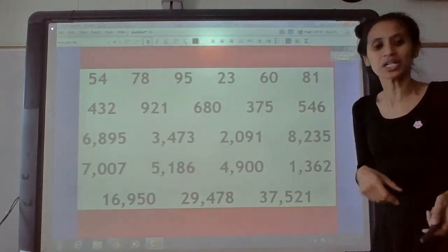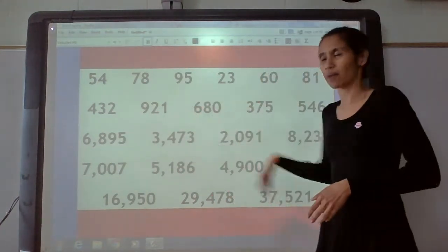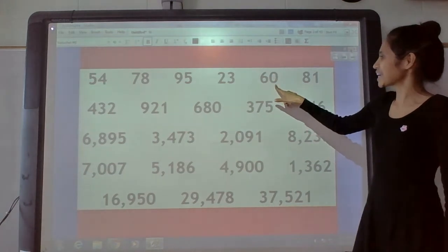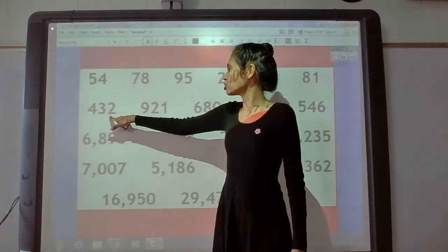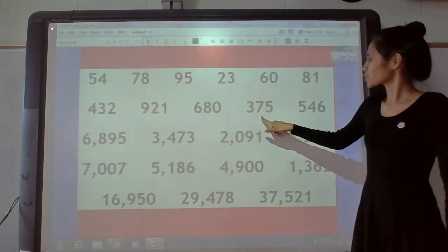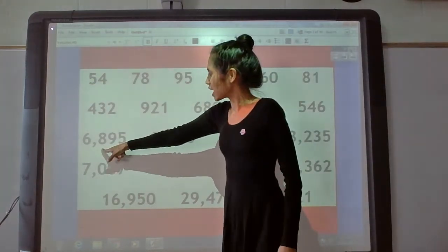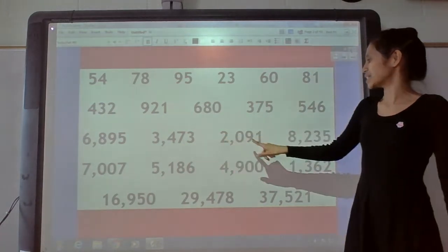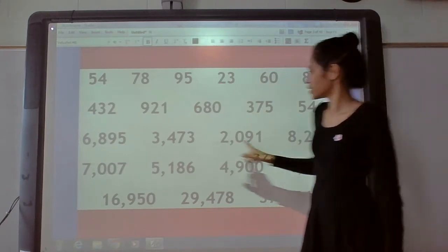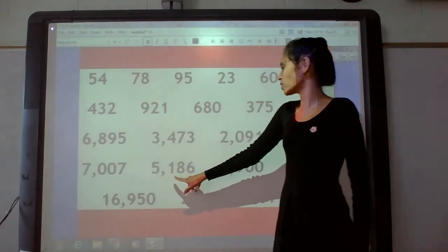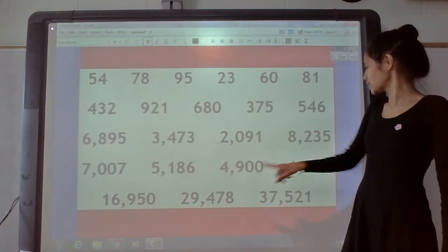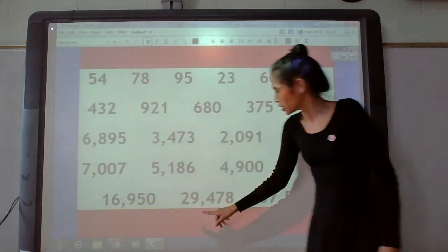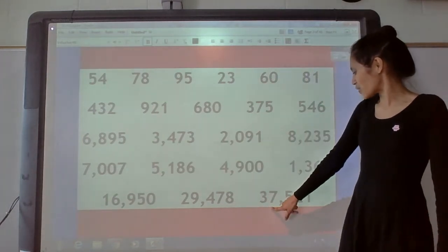Here is your list of numbers. Read these numbers with me. Starting at the top row and going down: 54, 78, 95, 23, 60, 81, 432, 921, 680, 375, 546, 6,895. Then: 3,473, 2,091, 8,235, 7,007, 5,186, 4,900, 1,362. And on the last row: 16,950, 29,478, and 37,521.